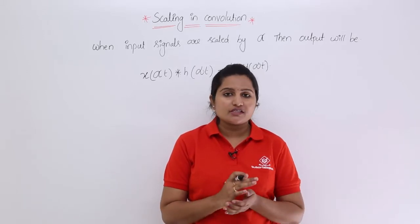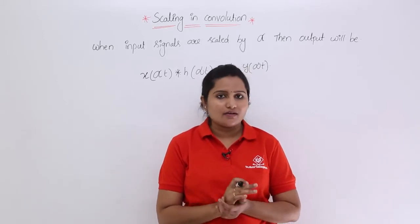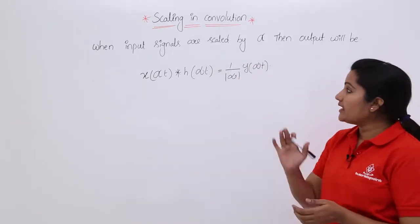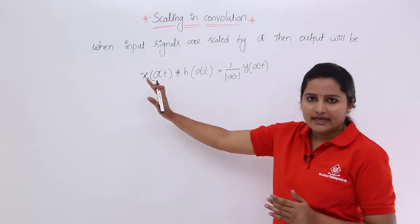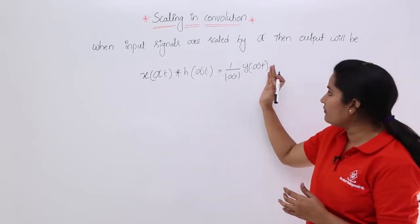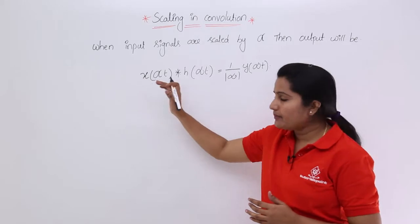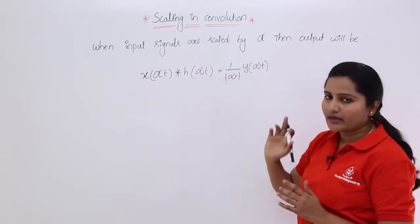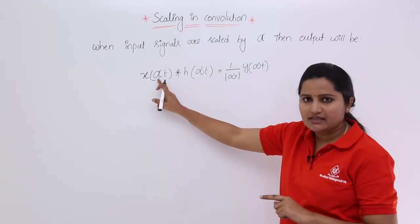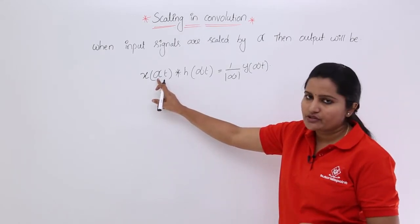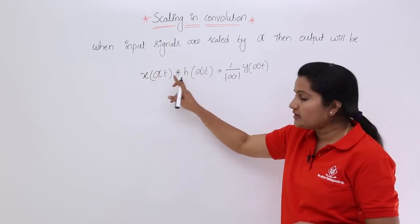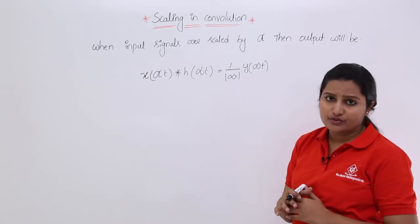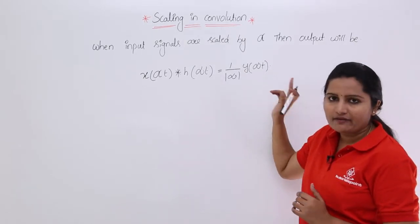In this video we are going to discuss scaling in convolution. When input signals are scaled by alpha, the output will be scaled by 1 over the modulus of alpha, giving y of alpha·t. So generally, x(t) convolved with h(t) gives y(t). If you scale both signals — the input and the impulse response — by alpha, then the resultant convolved signal is also scaled as (1/alpha)·y(alpha·t).